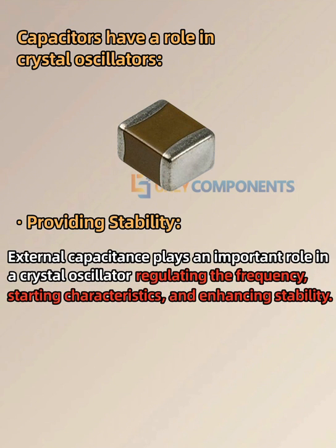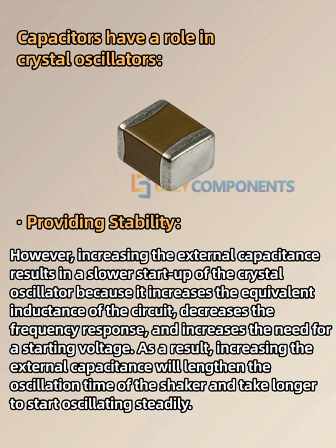External capacitance plays an important role in regulating the frequency, providing starting characteristics, and enhancing stability. However, increasing the external capacitance results in a slower startup because it increases the equivalent inductance of the circuit, decreases the frequency response, and increases the need for a starting voltage. As a result, increasing external capacitance will lengthen the time needed to start oscillating steadily.